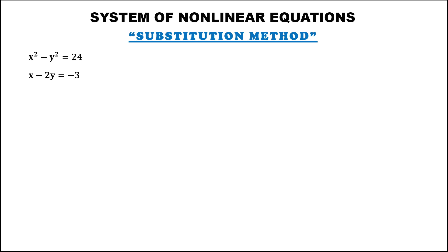For this problem, we need to solve the system of nonlinear equations using the substitution method. First, we need to isolate one variable — always choose the variable that has no exponent and no number.